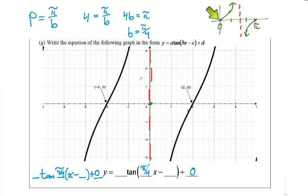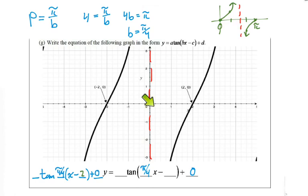Looking at the midline crossing point, it moved to the right. So our h is going to be two — we can shift two to the right or two to the left and land on the same spot, confirming h equals two.